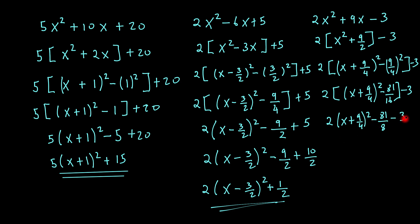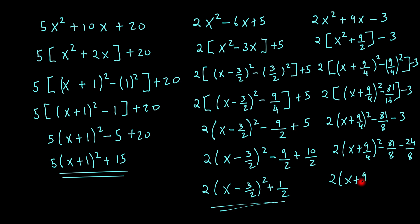If I convert 3 into a fraction, this would simply be x plus 9 over 4 all squared, that's minus 81 over 8, and if I convert that into a fraction, that would be 24 over 8. And this would be then 2 times x plus 9 over 4 all squared, so that would be minus 105 over 8. And that would be my final answer.